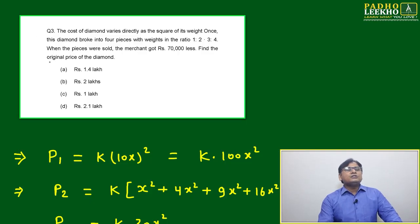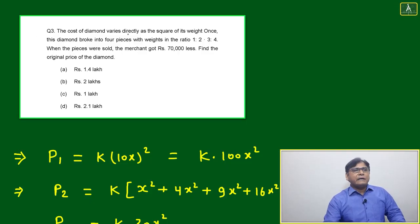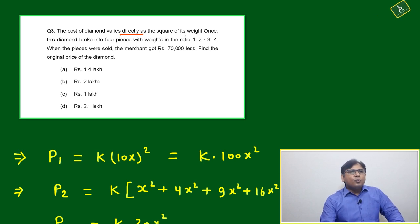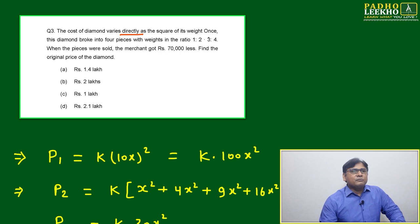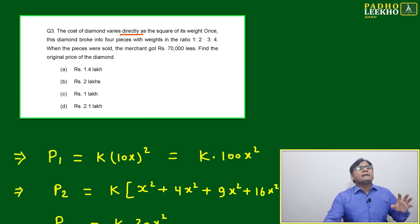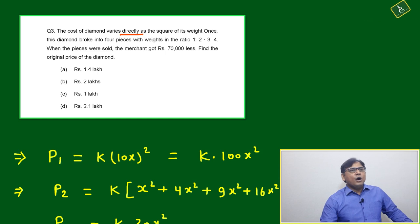Question number three is telling the cost of diamond varies directly as the square of its weight. The statement says: the cost of diamond varies directly as the square of its weight. This diamond broke into four pieces with weight in ratio 1:2:3:4.